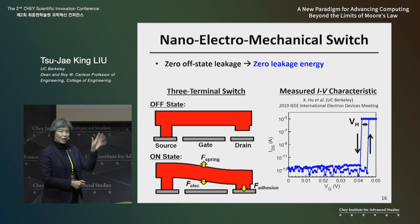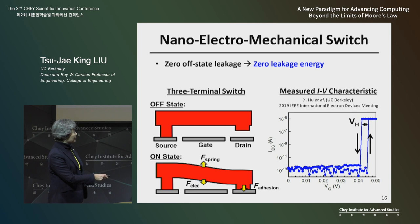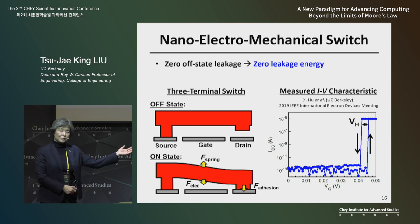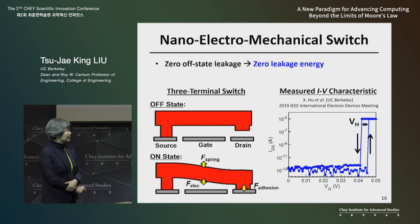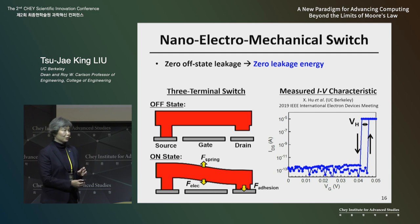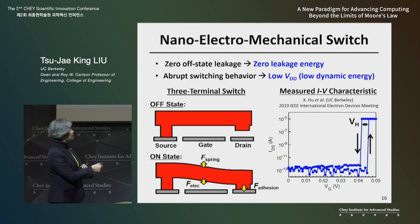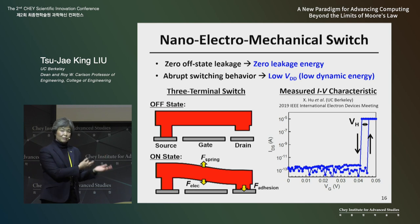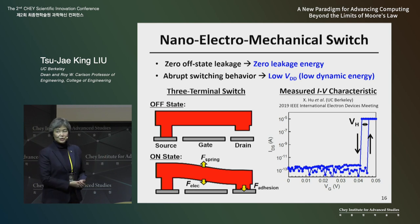Still, this is an experimental demonstration that a mechanical switch can operate at 10 times lower voltage and have zero leakage energy. This way we can achieve much better energy efficiency if we use mechanical devices.